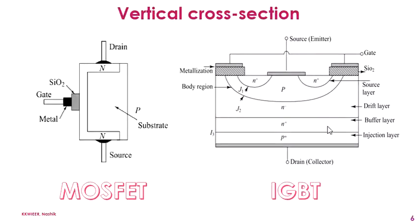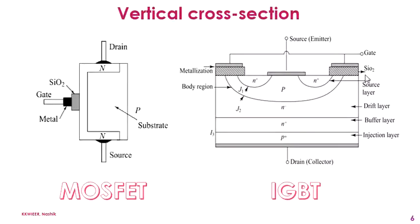The IGBT structure is also similar to a MOSFET — it is a PNPN layered structure. The key difference is the presence of a P+ layer near the drain or collector terminal, which acts as an injection layer. The N+ layer is a buffer layer, the N- layer is a drift layer, and it also has a SiO2 layer near the gate.